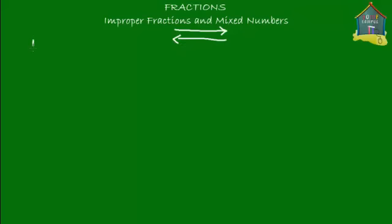Let's first take an improper fraction, say 11 upon 4. Now, we know this is an improper fraction because the numerator, which is 11, is greater than the denominator, which is 4. We learned in the last lesson that fractions whose numerators are either equal to or greater than the denominator are improper fractions.